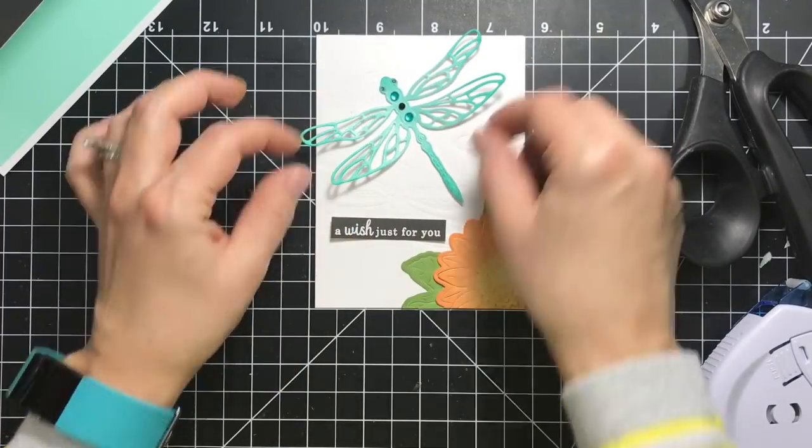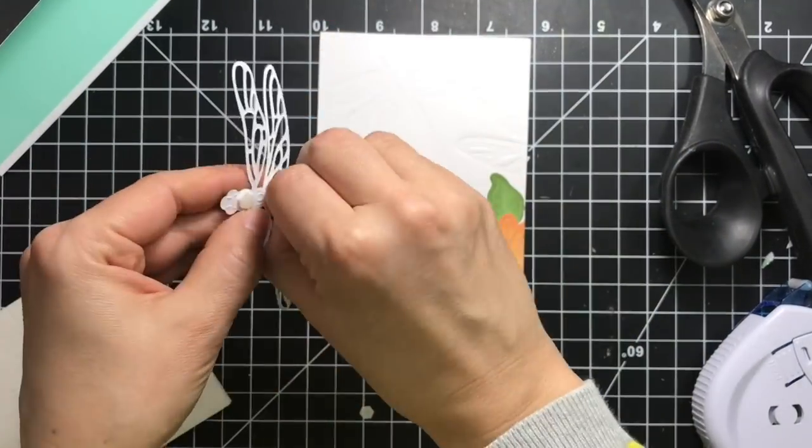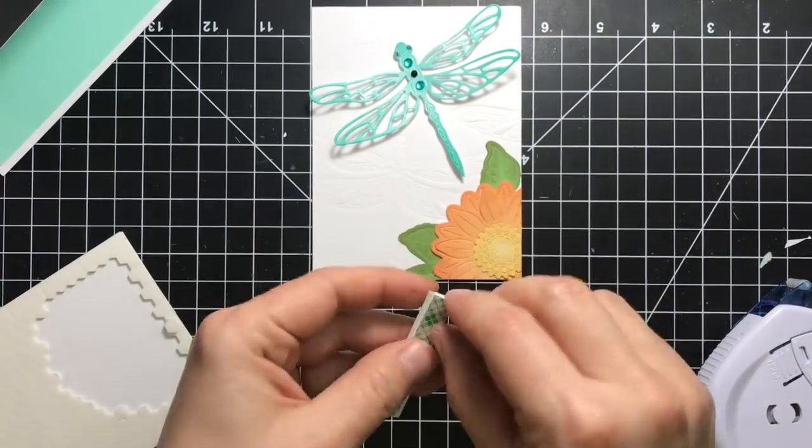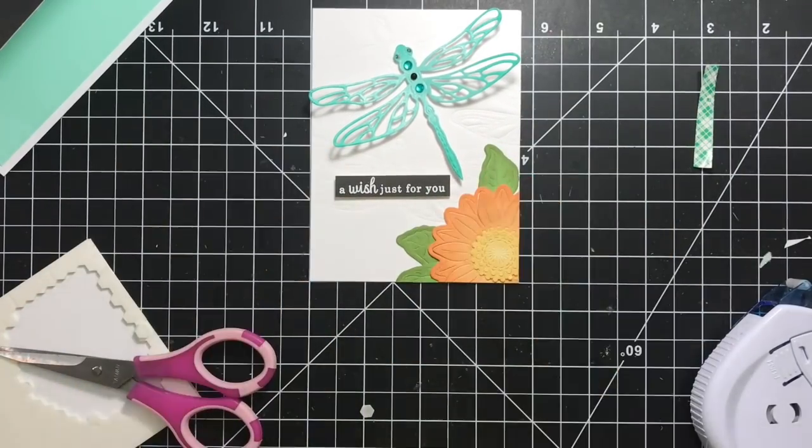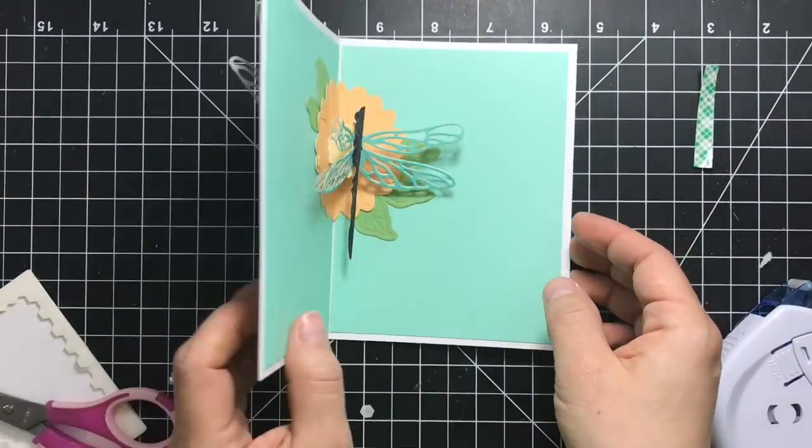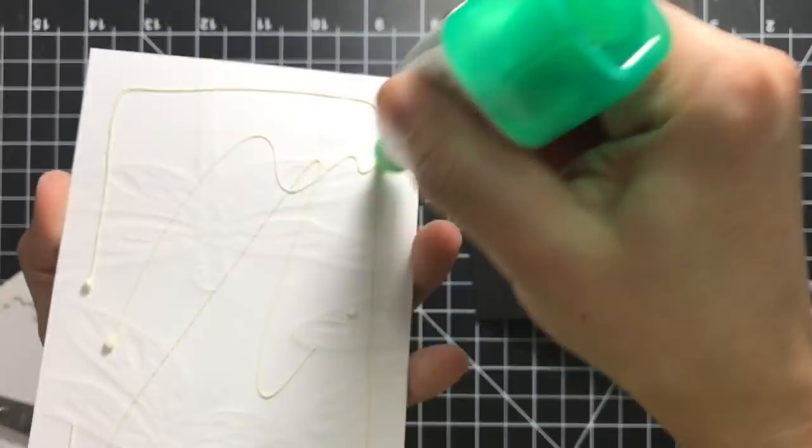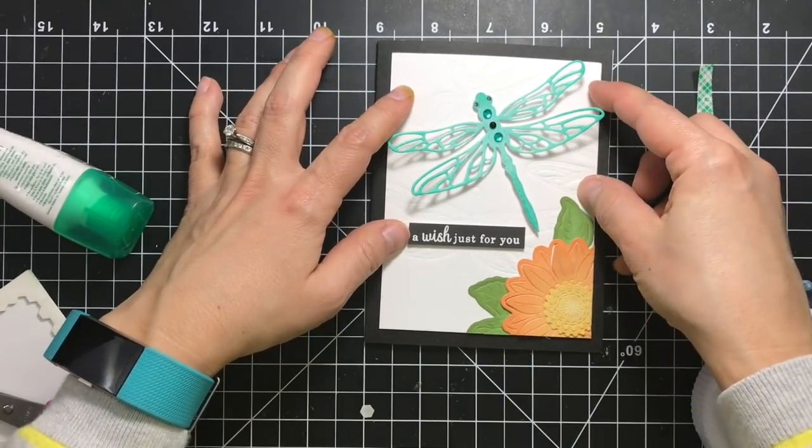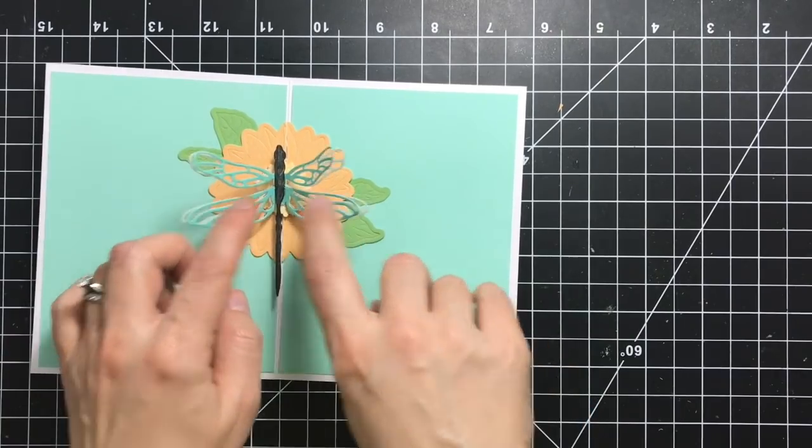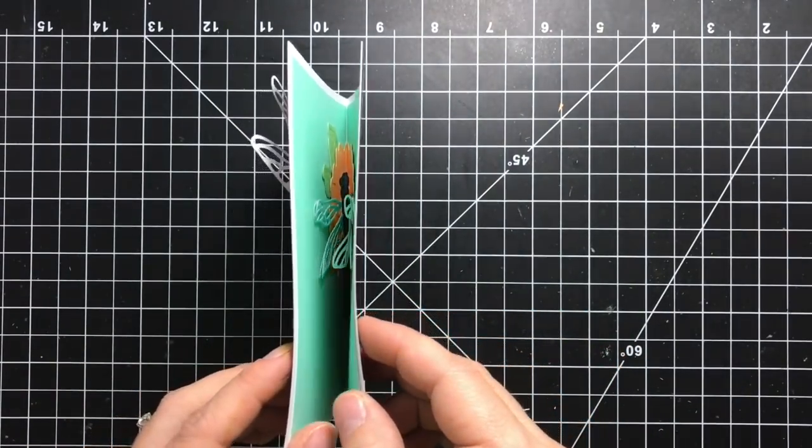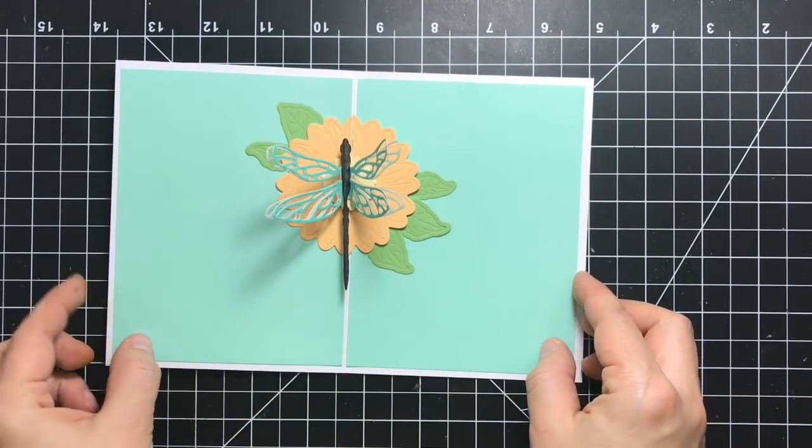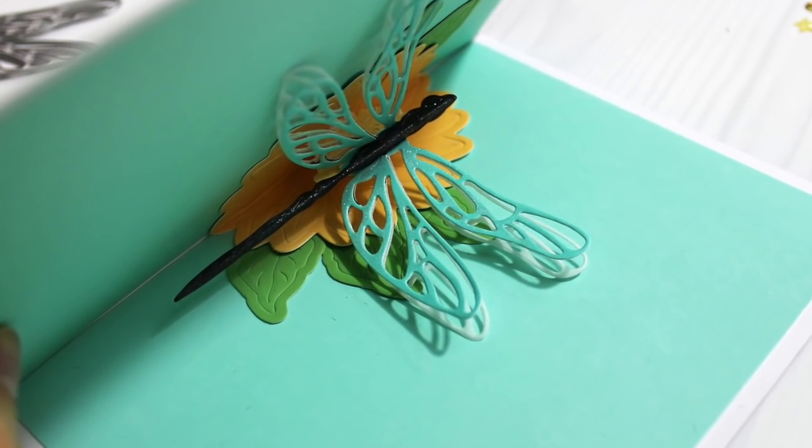For the dragonfly I'm using little dimensional tape as well as for the sentiment. I'm using a T ruler to make sure that everything is lined up and just again making sure that that pop-up opens and closes nicely. Adhere that on top and here is my finished card. Here's the pop-up. It closes and it opens.